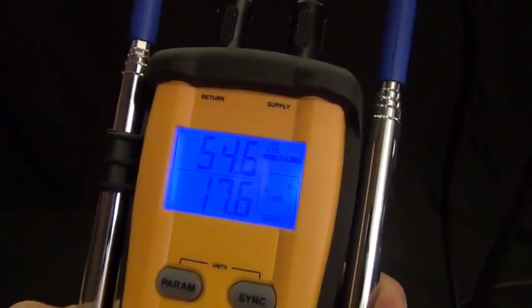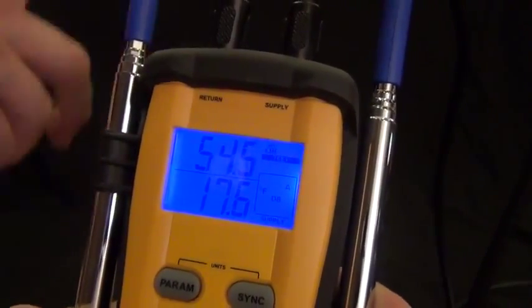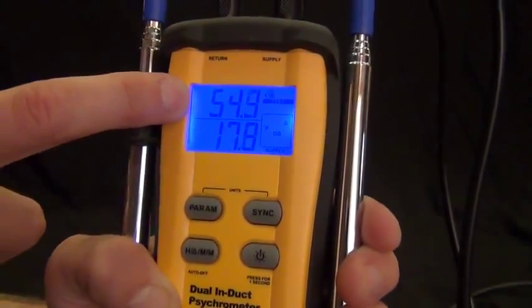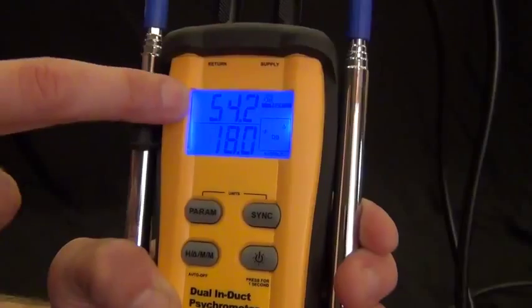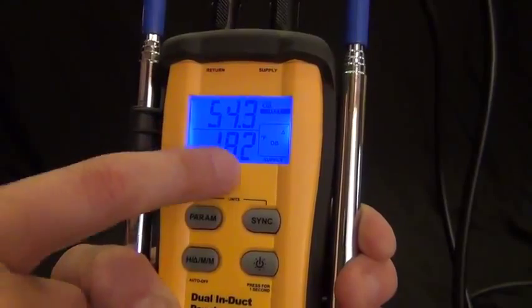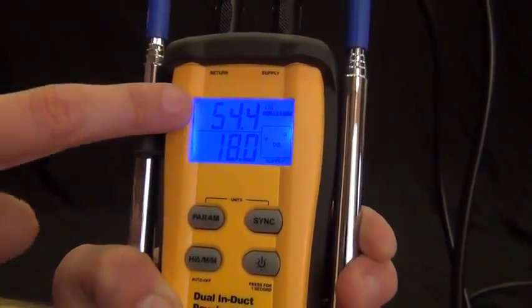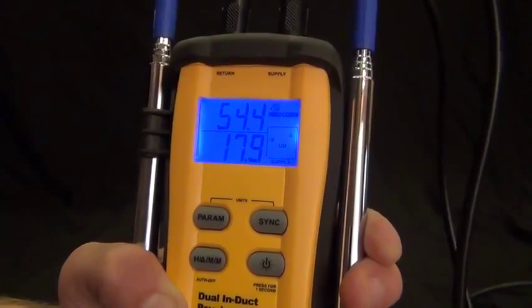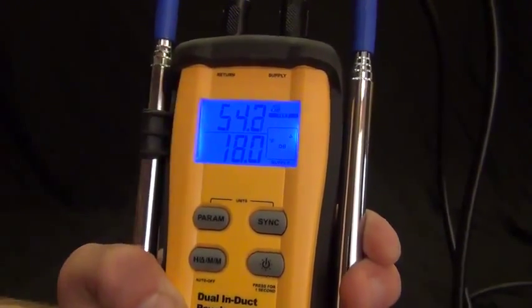So target evaporator exit temperature. And in this scenario I'm basically giving it a wet bulb and a dry bulb on my return side and it's telling me that my target evaporator exit temperature should be 54 degrees. And what this is saying is how far I'm off. So I'm 18 degrees above that 54 degrees, which in this case is about 73, 74 degrees in here. And so that would make sense.